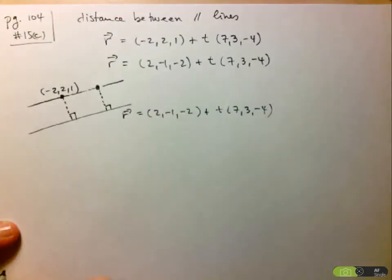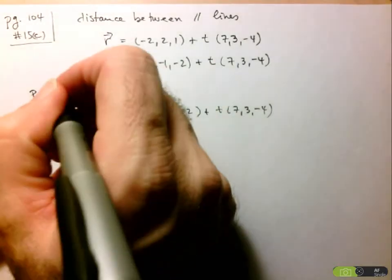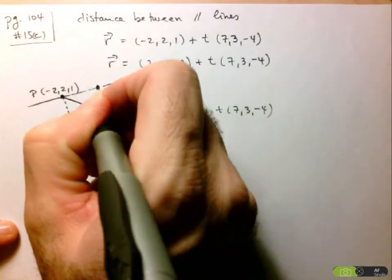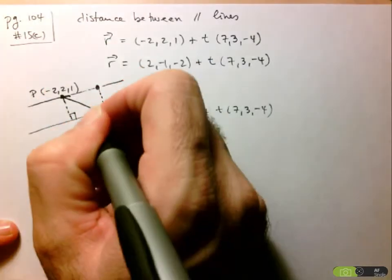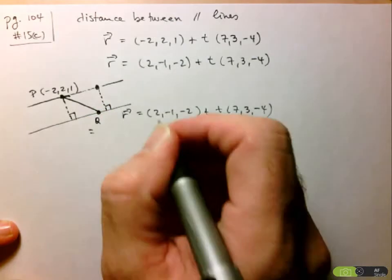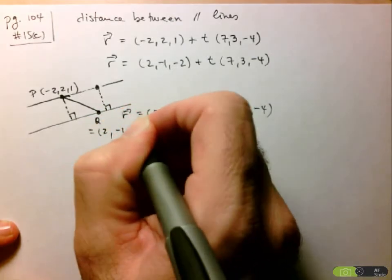So if we think of the formula that we came up with, I'll call this P. I need to join it to any point Q to form a vector. So here for my point Q, why don't I just use (2, -1, -2).